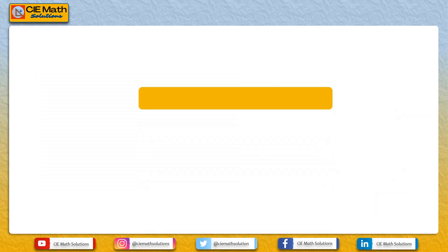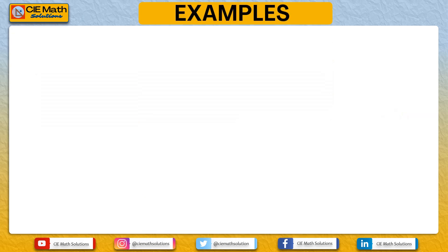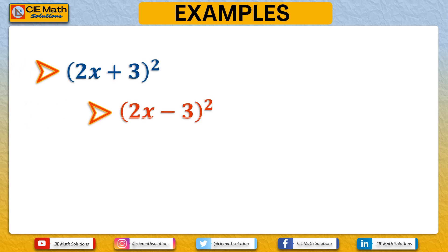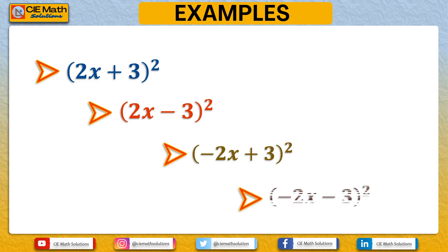Let us now proceed to the examples of squaring binomials of the form ax plus b. There will be four examples with variation of the signs of the first and second terms of the binomial: both positive, one positive and one negative, and both negative.